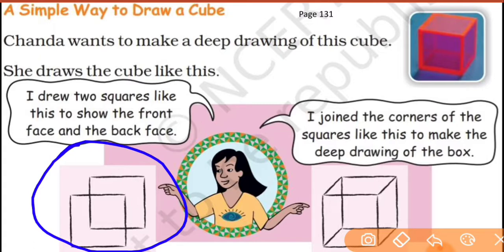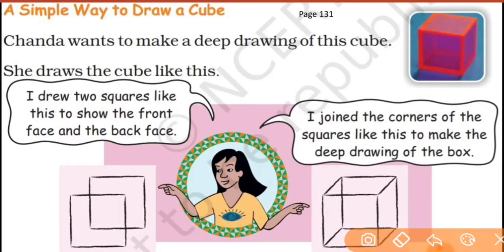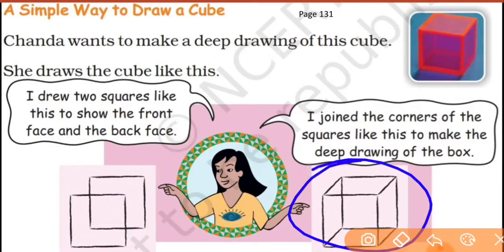Next, she joined the corners of the squares to make the deep drawing of the box. After joining all the corners, you get a shape like this — and this is the deep drawing of the cube. It's so easy! You can make a cube like this.